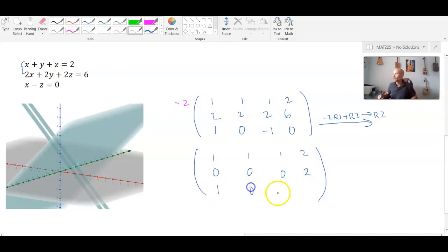And the third row stays the same because we didn't perform any row operations on that. And once again, in this second row right here, I see a problem. This is telling me that 0x plus 0y plus 0z has to equal 2, which is telling me that 0 has to equal 2.